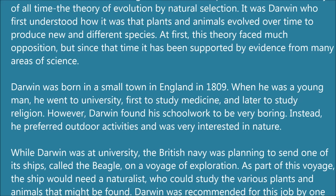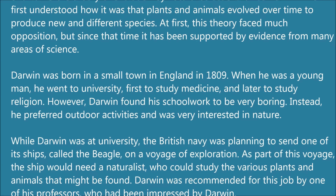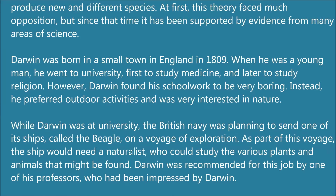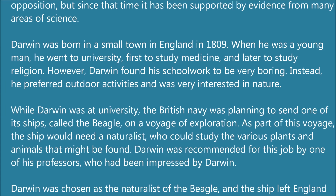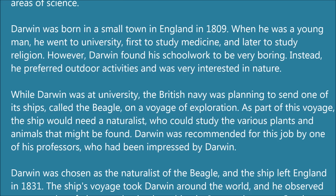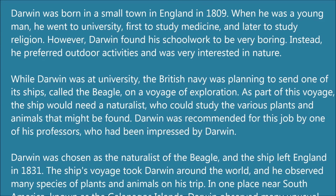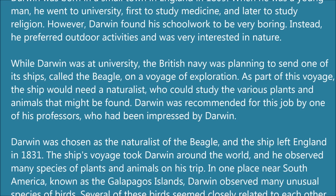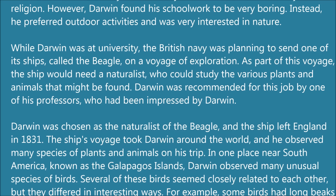While Darwin was at university, the British Navy was planning to send one of its ships, called the Beagle, on a voyage of exploration. As part of this voyage, the ship would need a naturalist who could study the various plants and animals that might be found. Darwin was recommended for this job by one of his professors, who had been impressed by Darwin. Darwin was chosen as the naturalist of the Beagle, and the ship left England in 1831.